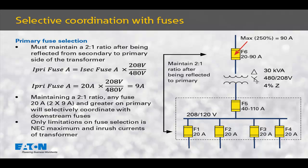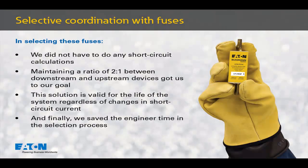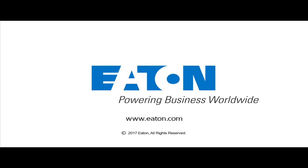This provides a lot of flexibility to the engineer for protecting the transformer. The only limitation in selecting this primary fuse is the National Electrical Code maximum and the inrush currents of that transformer. In selecting these fuses, we really simplified the life of the individual who had to select the protection for a transformer meeting code requirements and achieving selective coordination. We did not have to do any short circuit calculations. We simply maintained a ratio of 2-to-1 between downstream and upstream fuses, and this solution is valid for the life of the system regardless of changes in short circuit current. Thank you for taking time to talk about this technical topic.